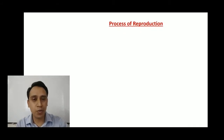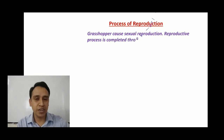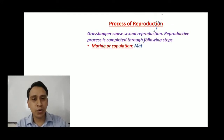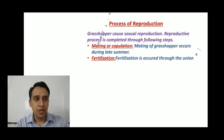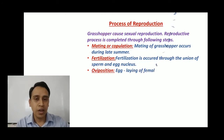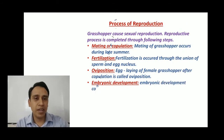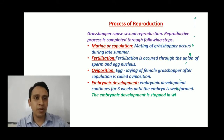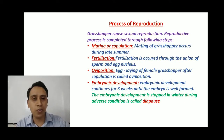Now, the process of reproduction. Grasshopper causes sexual reproduction, completed through several steps. First is mating or copulation. Mating of grasshopper occurs during the summer. During copulation, the male ejects the seminal fluid into the vagina. Next is fertilization. After copulation, fertilization occurs through the union of sperm and the egg's nucleus. The sperm enters into the egg through the micropyle, and through the union of the sperm and egg nucleus, fertilization is completed.